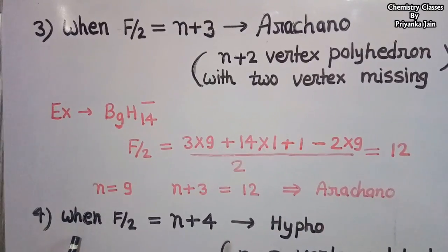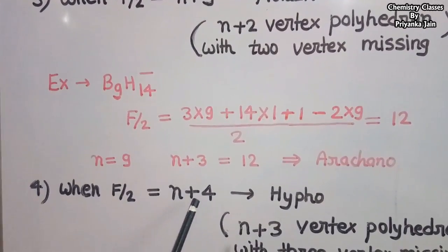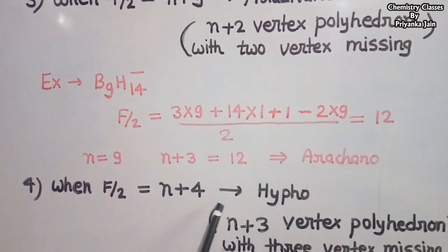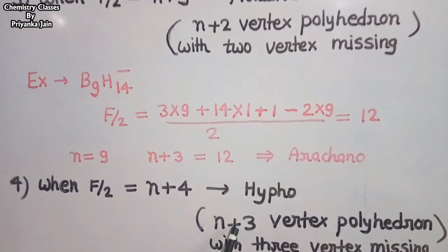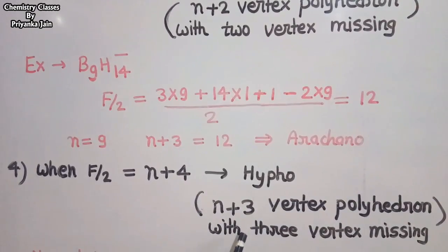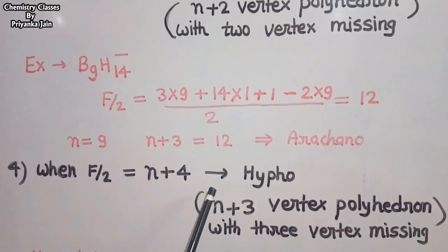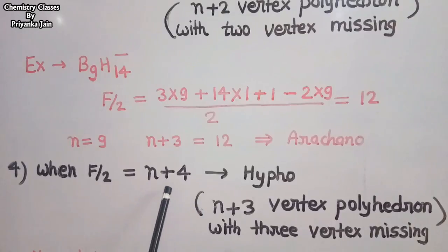When F/2 equals N plus 4, the compound will have a hypho structure — an (N+3)-vertex polyhedron with 3 vertices missing. However, this type of compound is usually not found because the high electron count causes electrons to enter anti-bonding molecular orbitals, giving instability to the compound.